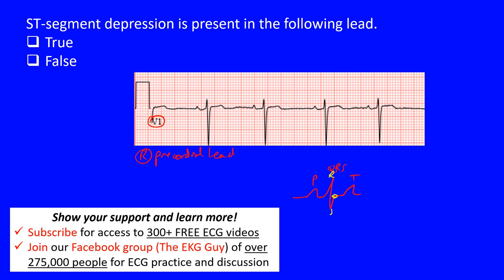This is the J point. This is the PR segment. This is the PR interval. Notice that the PR interval includes both the P wave as well as the PR segment. Then the QT interval includes the QRS complex all the way to the end of our T wave. Notice it includes ventricular depolarization and ventricular repolarization — both are included in our QT interval.